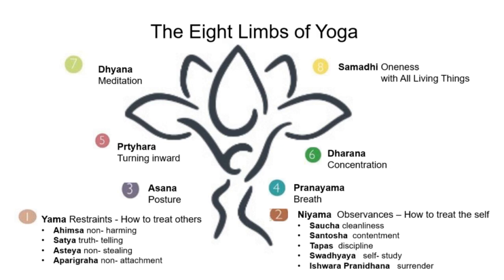The first four stages are preparatory or external phases and are concerned with specific practices. These phases are carried out basically by the conscious mind — the logical, analytical part of consciousness which is active in the normal waking state. The last four phases are greater or internal phases, representing states of awareness along with the practices required to attain them. These greater stages involve the subconscious mind, which is the storehouse of all experiences, and the ego, which manages the circulation of information into the conscious mind.